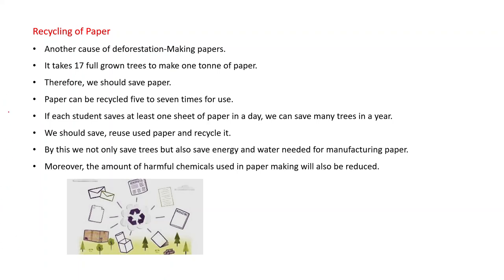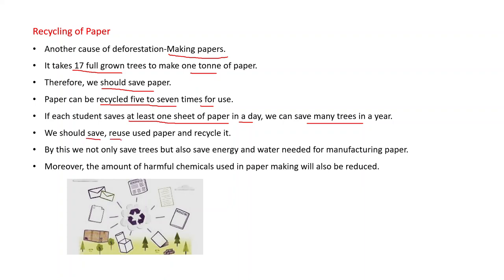Recycling of paper: another cause of deforestation is making paper, since paper is obtained from trees. It takes 17 full-grown trees to make one ton of paper. Therefore we should save paper. Paper can be recycled five to seven times for use. If each student saves at least one sheet of paper per day, we can save many trees in a year. We should reuse used paper and recycle it.